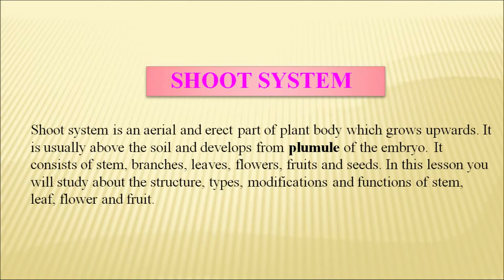Every seed has an embryo in it and the plant develops from the embryo. The plumule part of the embryo develops into the shoot system and the radicle part of the embryo develops into the root system.